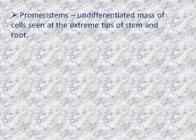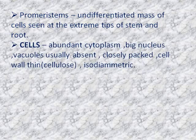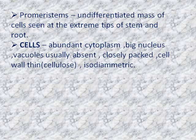This is the starting of meristems from which the meristematic cells divide and grow. So, pro-meristem. Now, how are the cells? The cells of the meristematic region have abundant cytoplasm and a big nucleus. Usually the vacuoles are absent. The cells are very closely packed, tightly arranged, and they have a very thin cell wall consisting of cellulose. The cells are mainly isodiametric, that means equal in size.